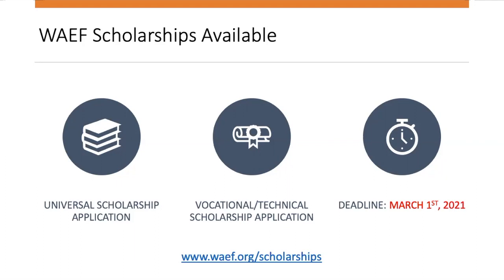Students awarded with the universal scholarship application can use it at any two or four year college or university in or out of Washington state. We do have students studying all over the country. The second application is the vocational or technical application, and this is for students who like to work with their hands and want to pursue a vocational degree such as electrical, welding, HVAC, mechanics, and more. The description on our website includes a full list of eligible certificates and programs. If awarded, the vocational or technical scholarship must be used at an accredited non-profit vocational school, like a Perry Tech. Our deadlines are both March 1st, 2021.